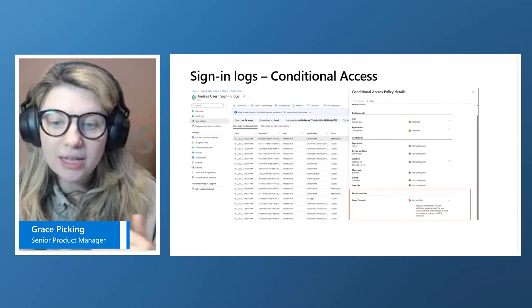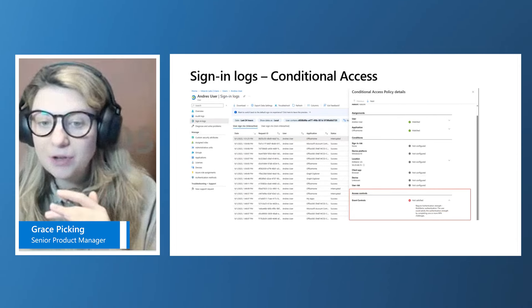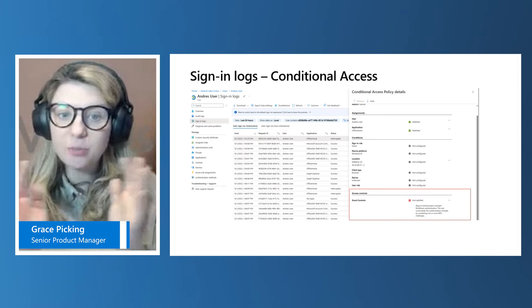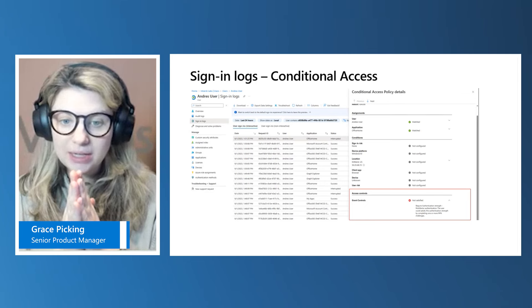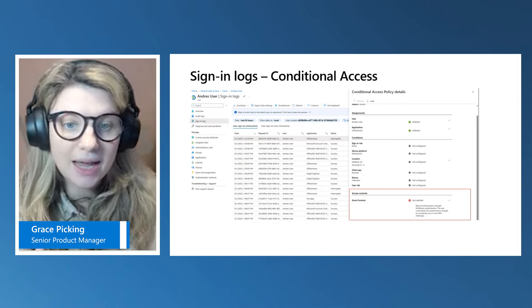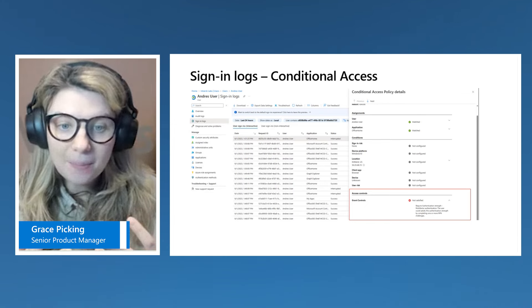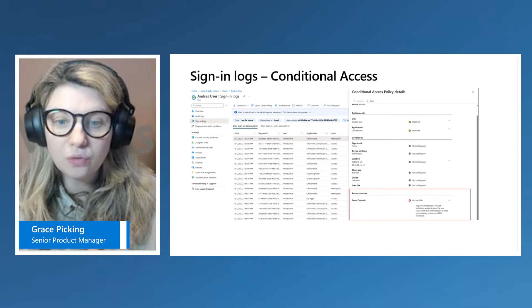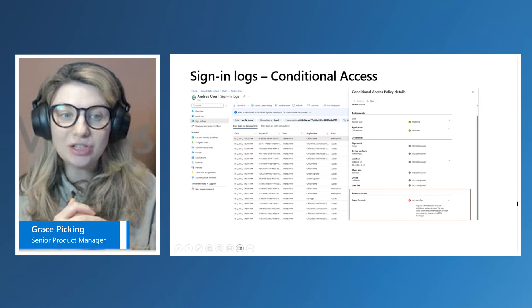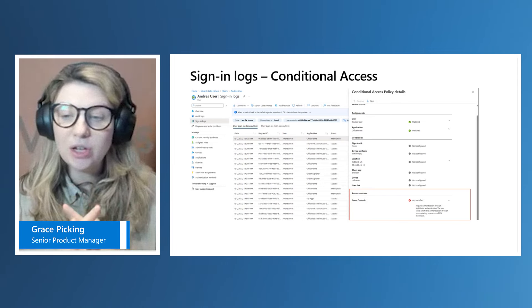When you go further into the conditional access policy details blade, you can see under the specific grant controls not just the authentication strengths requirements which were or weren't met, but others as part of that request from that conditional access policy. You can see information about the user, the application, the risk of that user, the location, the platform, the app itself, the device, and the overall user risk as well as sign-in risk. This is really helpful if you have a user who cannot understand why they're being blocked, limited, or requested for registration.